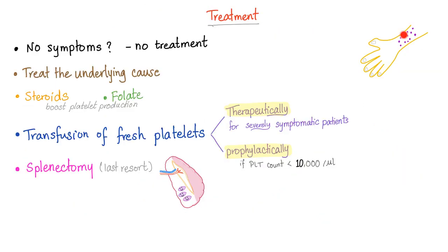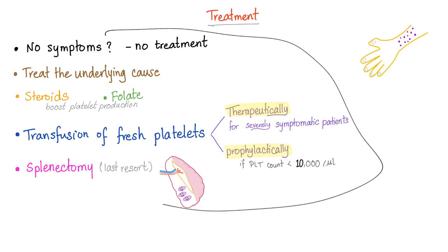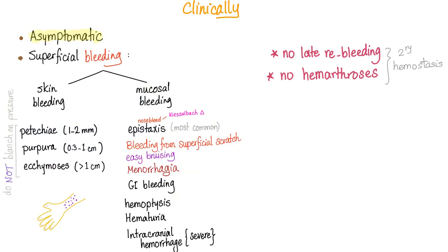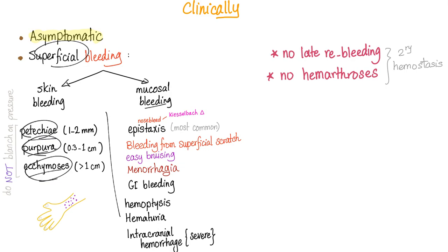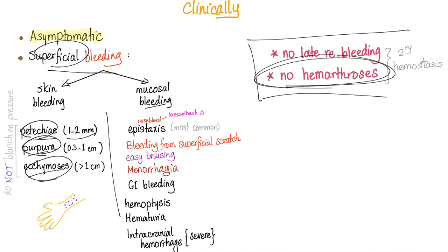Treatment of petechiae depends on the underlying cause, and it's the same as the treatment of thrombocytopenia. Clinically, thrombocytopenia can be asymptomatic or cause superficial bleeding — not deep, superficial. It can be skin bleeding or mucosal bleeding. Skin bleeding includes petechiae, purpura, and ecchymosis — small, medium, large. In all cases of superficial bleeding or thrombocytopenia, there is no deep bleeding, therefore no hemarthrosis, which is bleeding into joints, and no late re-bleeding.